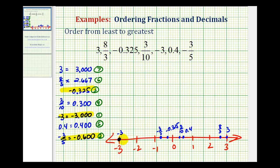Let's go ahead and write these out. We had negative three, negative three-fifths, negative 0.325. So those were the negative numbers. And then we had 0.300, or three-tenths, followed by 0.4, and then 2.667, which was eight-thirds, followed by positive three.